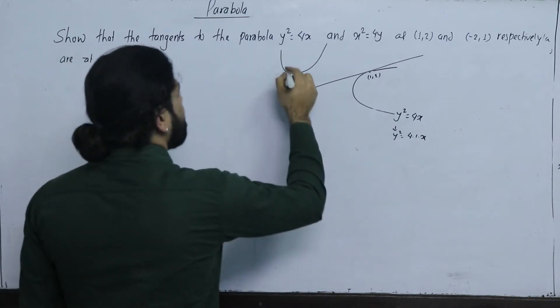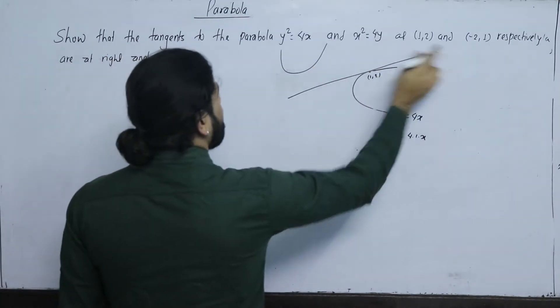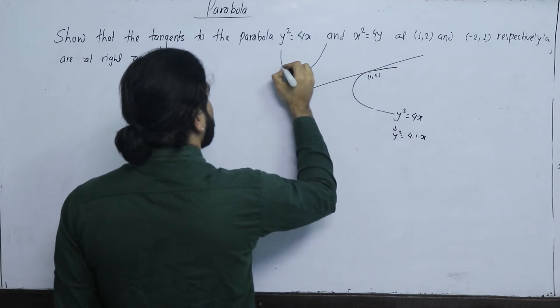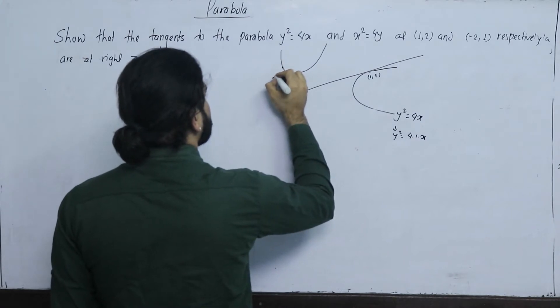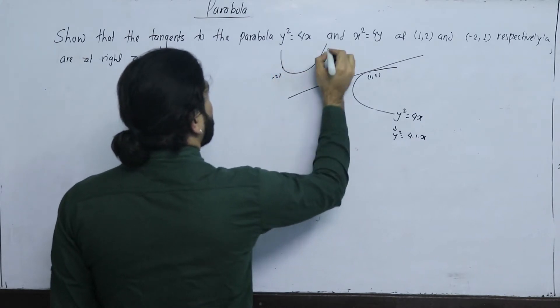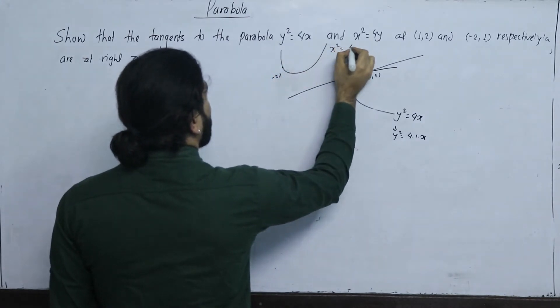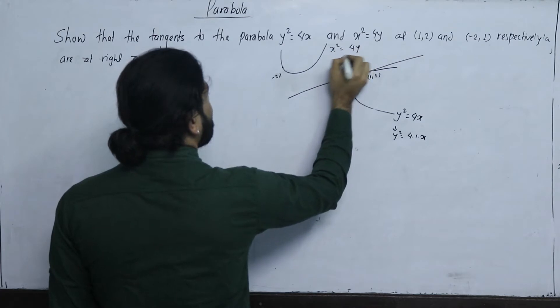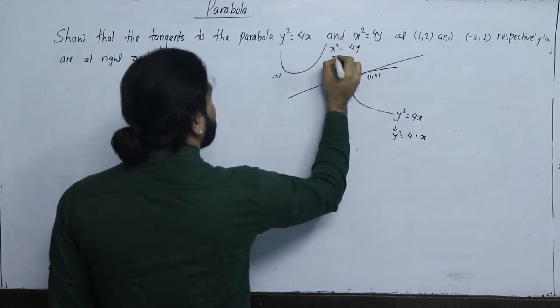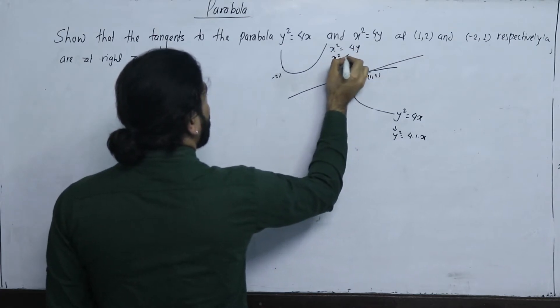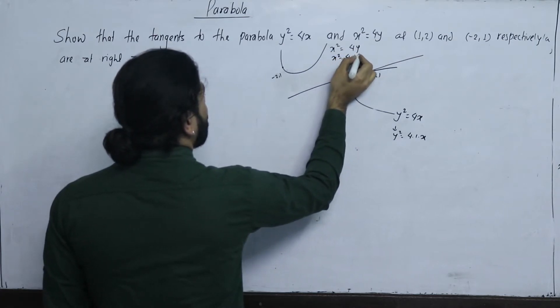For the second parabola x² = 4y, consider the point (-2,1). This is x² = 4 × 1 × y.